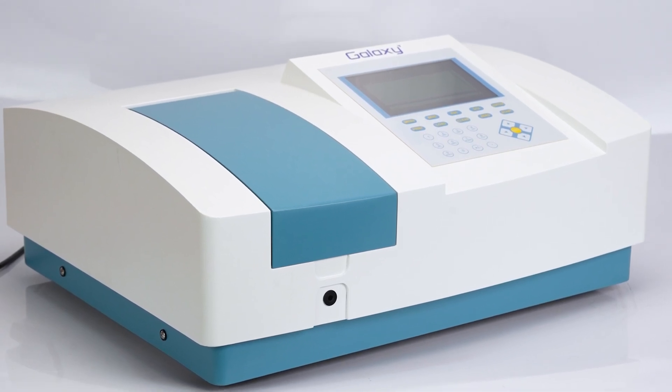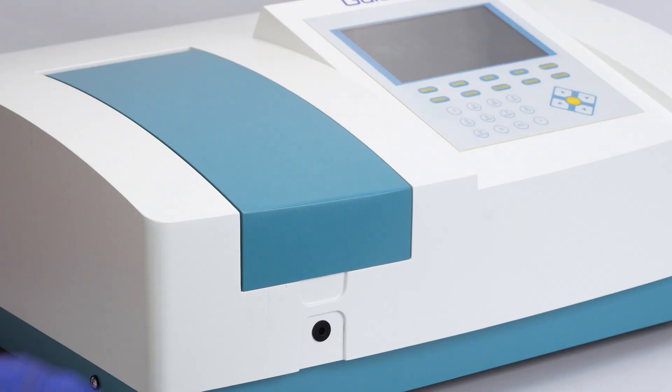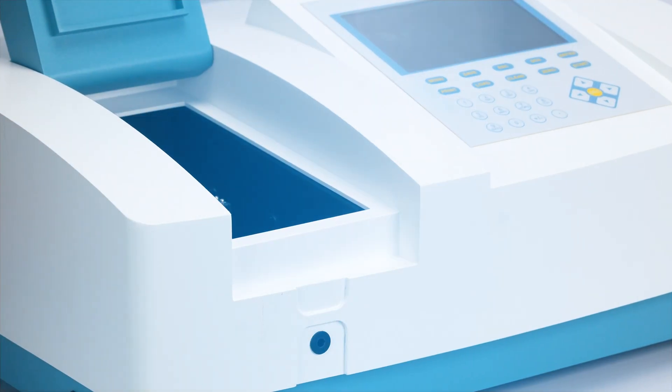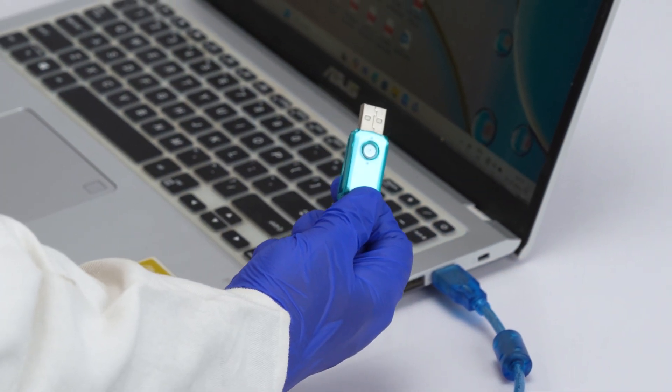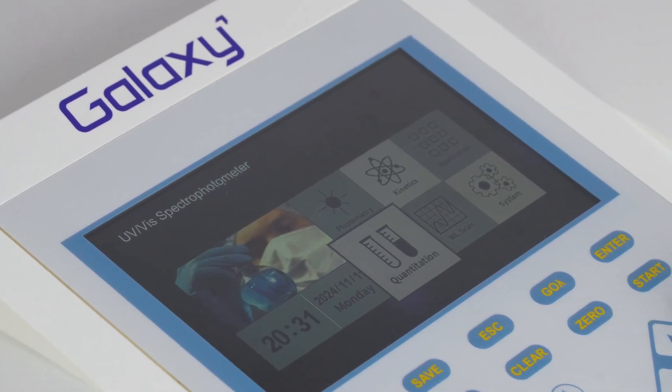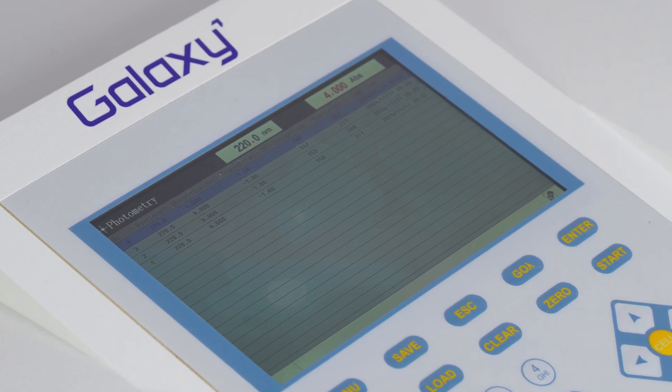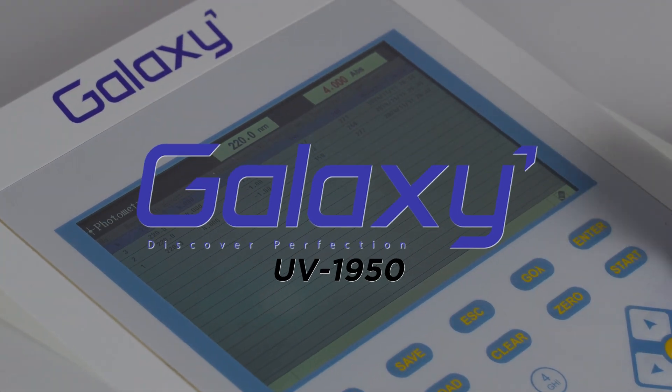Welcome to our comprehensive guide on the Galaxy Double-beam UV-Visible Spectrophotometer UV1950. This advanced device is perfect for a wide range of analytical applications offering precision, versatility and user-friendly features. Today we'll walk you through its accessories, setup and functionality to help you get started seamlessly.